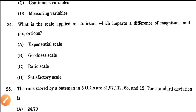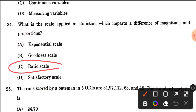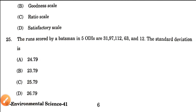Question number 24: What is the scale applied in statistics which imparts a difference of magnitude and proportion? The scale that shows difference in both magnitude and proportion is the ratio scale. Option C is the correct answer.